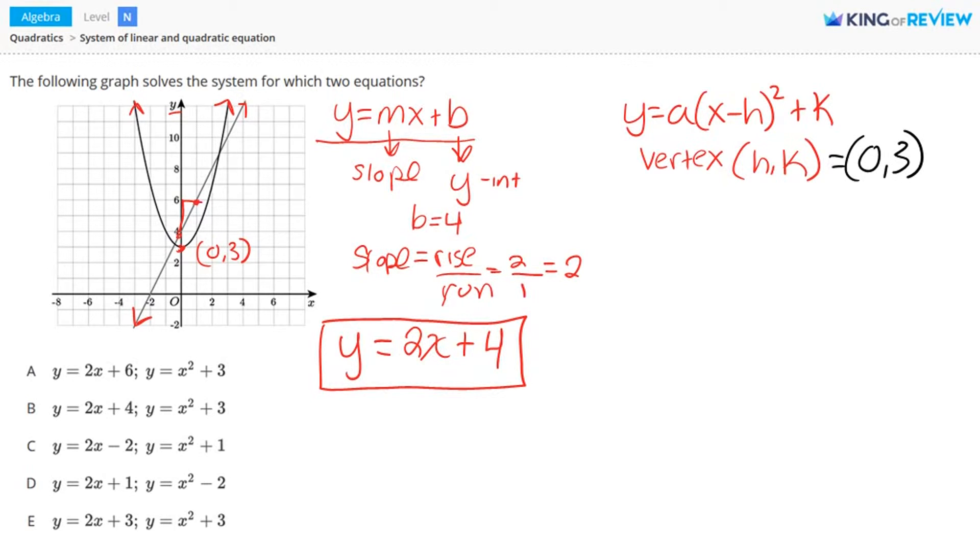Let's fill this into the equation in vertex form. y equals a times x minus h, h is 0, squared, plus k, and k is 3. Now let's simplify this. We have y equals a times x squared plus 3.